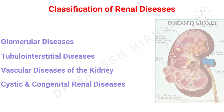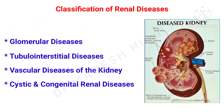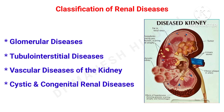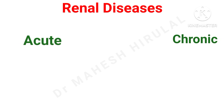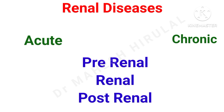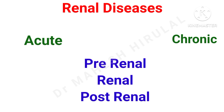Anatomically, renal diseases can be classified as glomerular diseases, tubular interstitial diseases, vascular diseases, and cystic and congenital diseases. Clinically, renal diseases can be understood as acute and chronic. Etiologically, renal diseases can be understood with pre-renal, renal and post-renal causes.